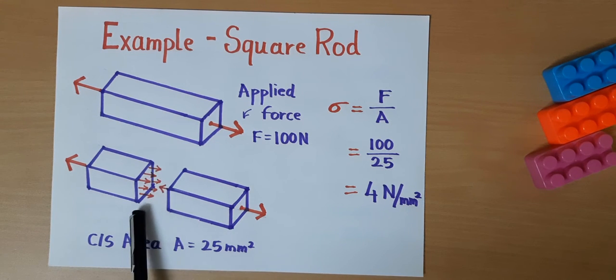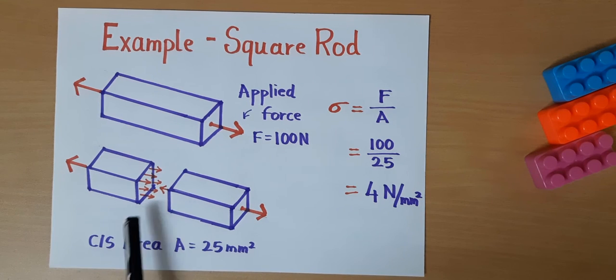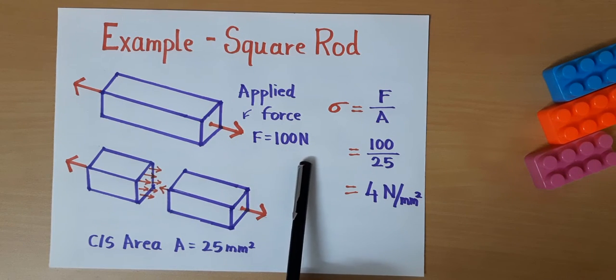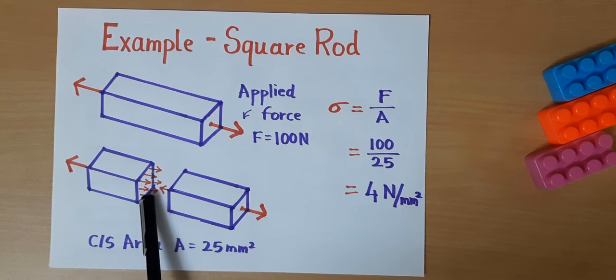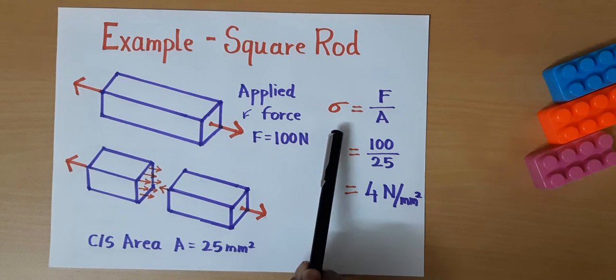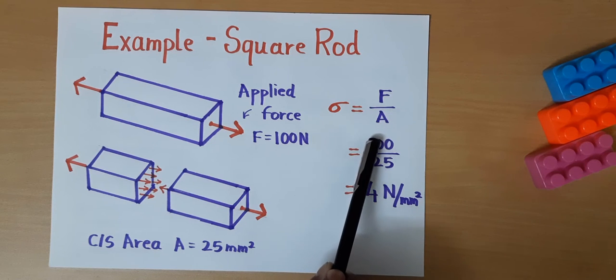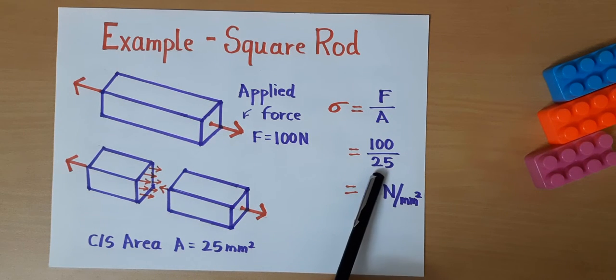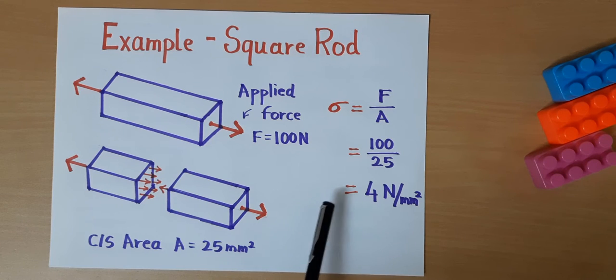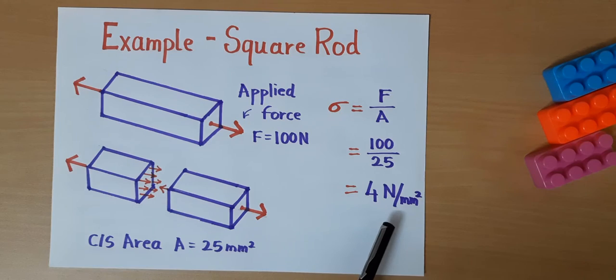Normal force per unit area is called normal stress. In this example, we have applied force of 100 Newton and cross section area of this rod is 25 mm square. So stress formula is force per unit area. 100 divided by 25 equals 4 Newton per millimeter square. So stress generated in this square rod is 4 Newton per millimeter square.